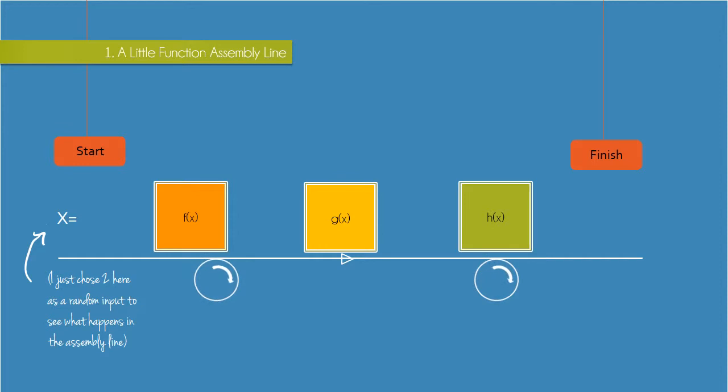What I'll do is I'll assign different rules to each of these functions and then we can send a number through and watch what happens. So let's take f of x to be 2x minus 1 and g of x to be equal to x squared and h of x maybe x plus 4.